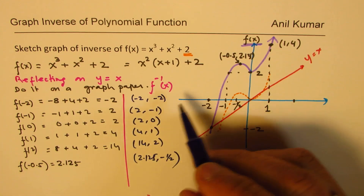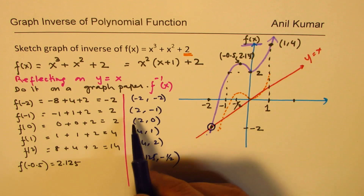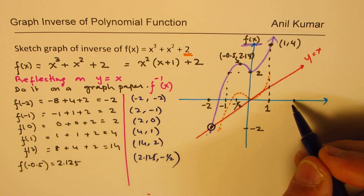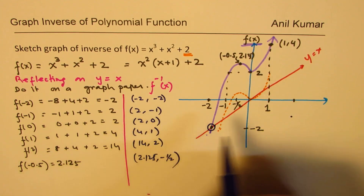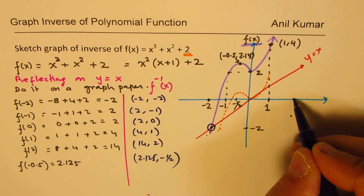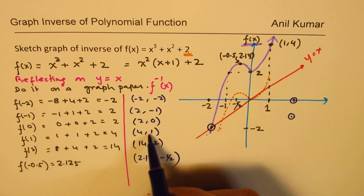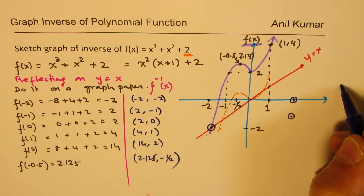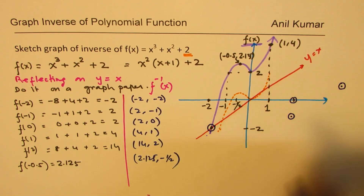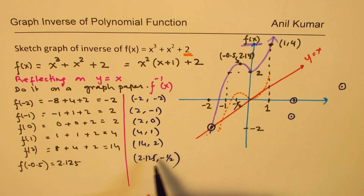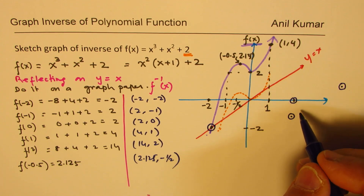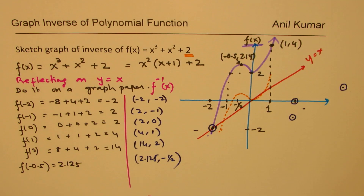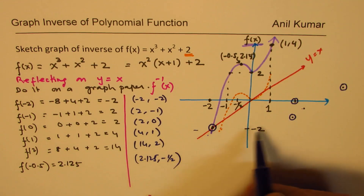Now the idea is to plot these points. So (2, −2) goes right there; (2, −1) is somewhere here; (2, 0) is here; (4, 1) goes right there; (14, 2) is very far away; and around x slightly above 2 we have y = −0.5, so (2.125, −0.5) is plotted right here. All these points are now marked on the coordinate plane.